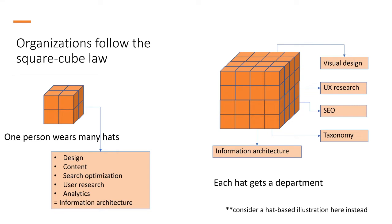But once you start getting to a larger organization, that square-cube law kicks into effect. The surface area of that cube where the organization is encountering the customer is supported by more and more internal area. And that internal area might not just be a visual design person, but a department — a UX research department, SEO department, taxonomy department. Information architecture becomes a discipline in its own right, working to align and connect and keep coherent, for the sake of that customer connection, the different perspectives and requirements that serve the customer.